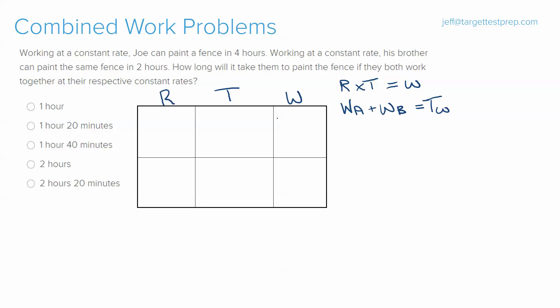The first thing we want to do is fill in our chart. Don't get trapped — when they say Joe can paint a fence in four hours, that's not his time; it's saying he can do one job per four hours, so we write one over four. His brother can paint the same fence in two hours, so that's one job per two hours, or one over two.